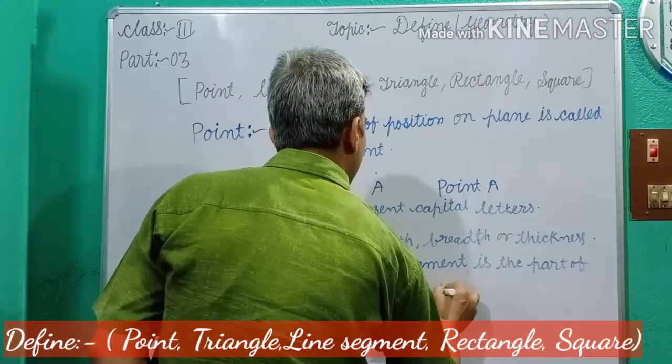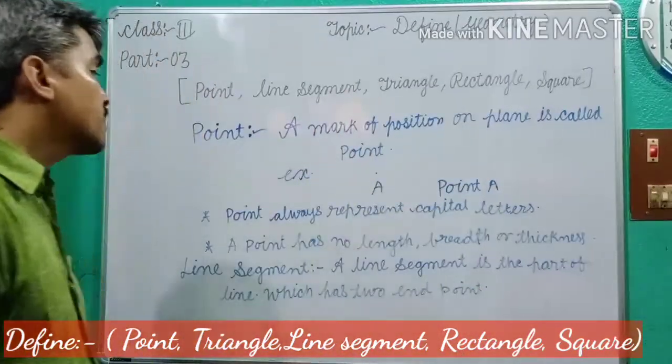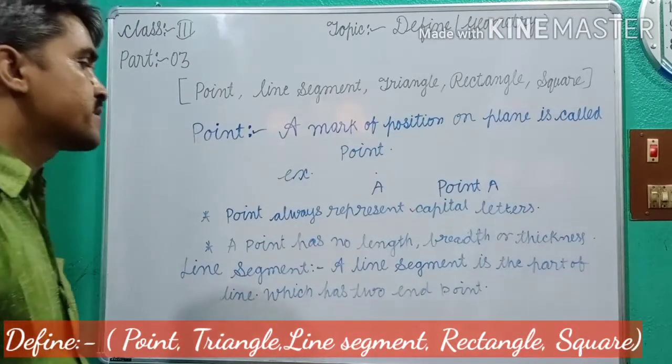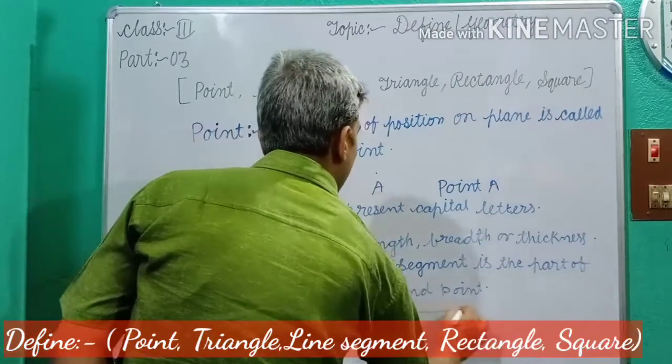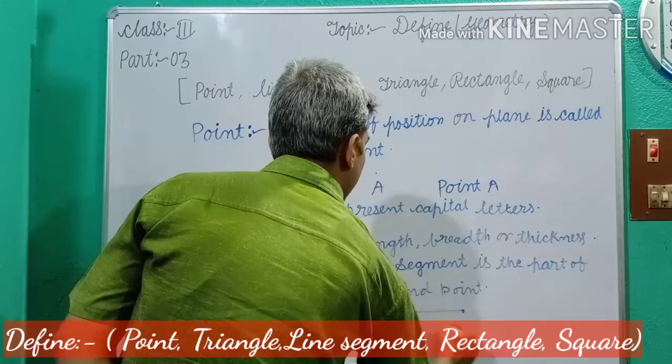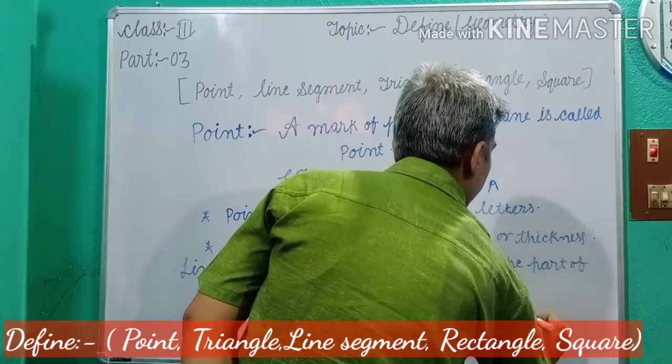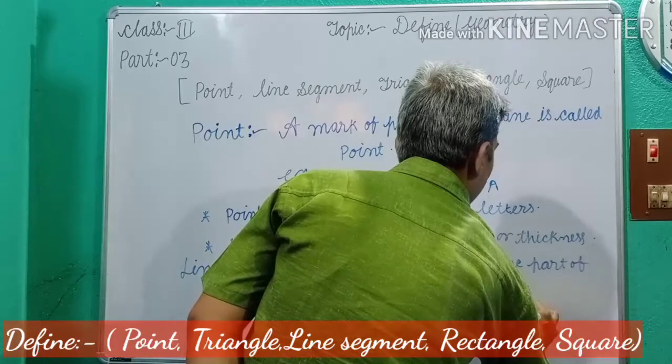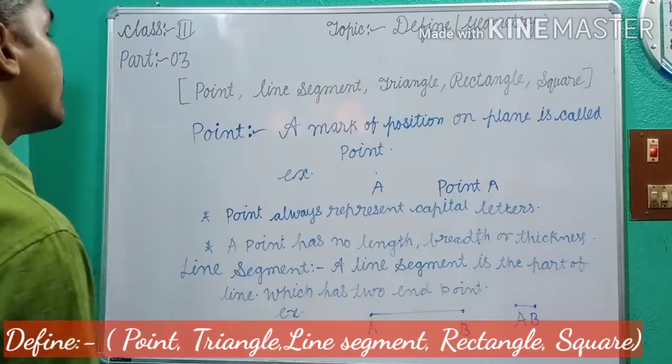Two end points. Dear students, asking the question, how many end points are in line segment? Two end points. For example, suppose in this way you represent, AB is the line segment. AB is the line segment.